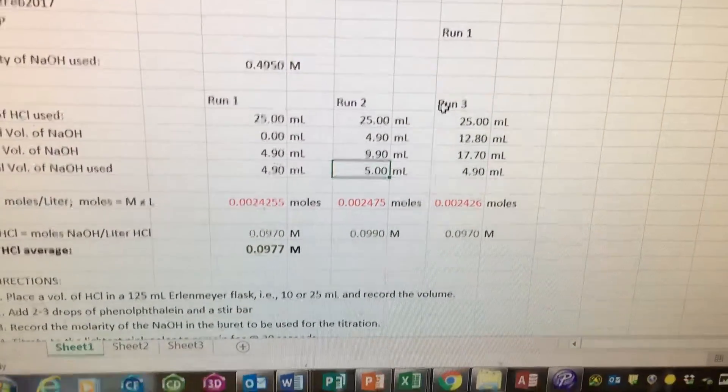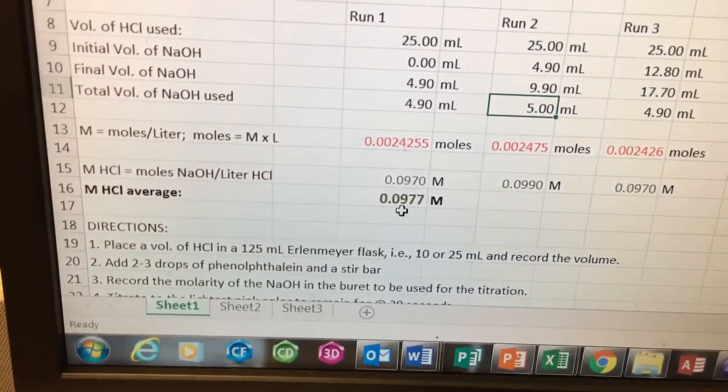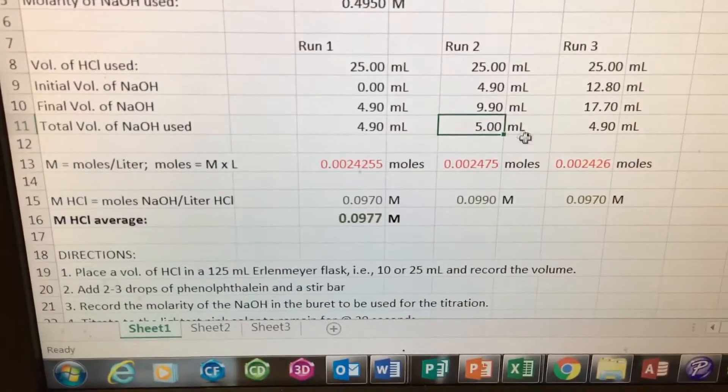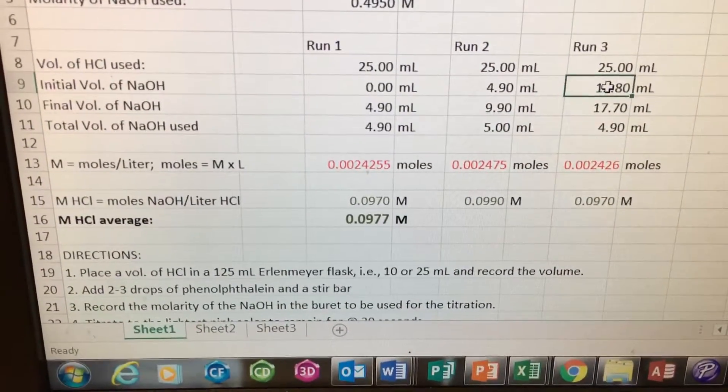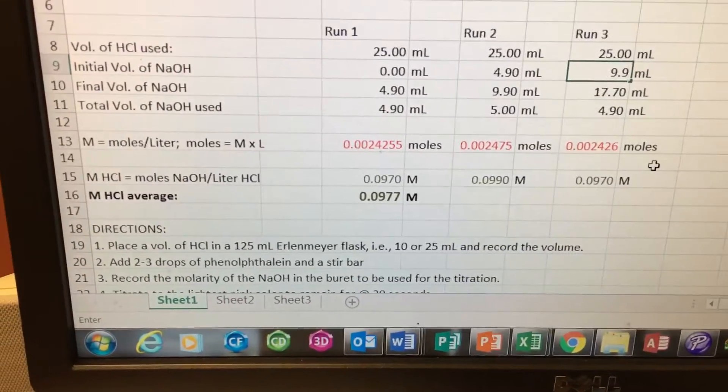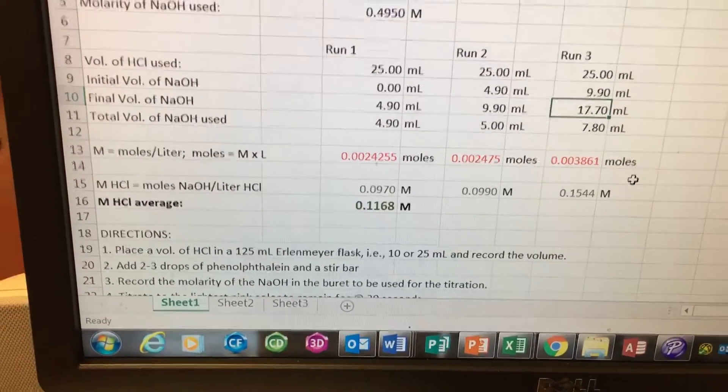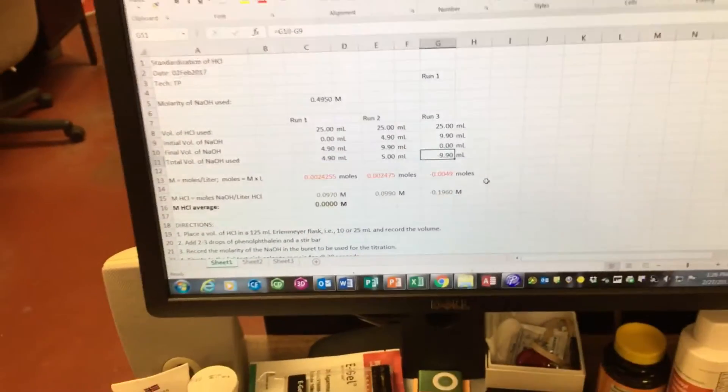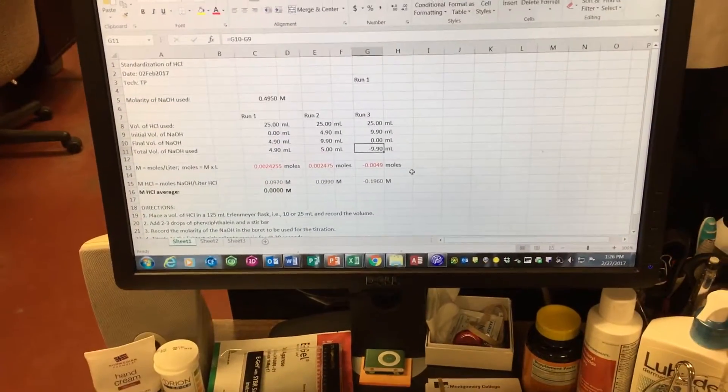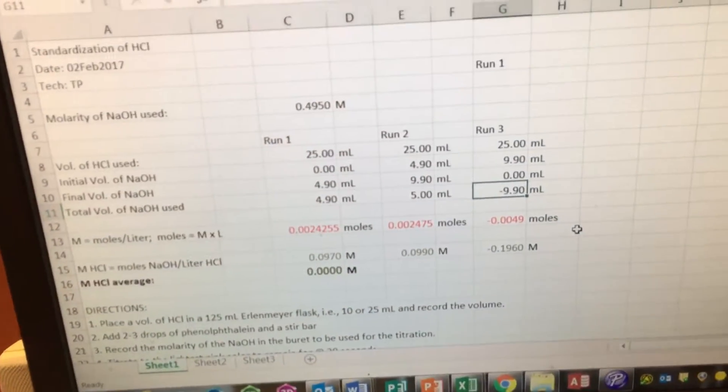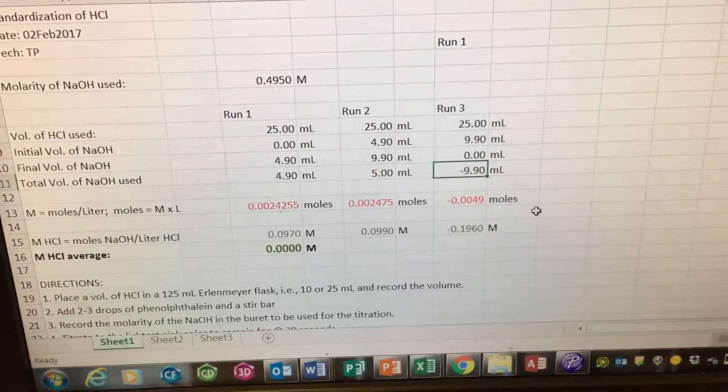I'm gonna do the third trial. So far we almost got about 0.0977 molar. Not bad. So we're gonna start initial volume at 9.9 right there, and we're gonna enter that zero. We got one more run. It should conclude the titration, the standardization of this hydrochloric acid for the day. All right, I'll keep you posted. Bye.